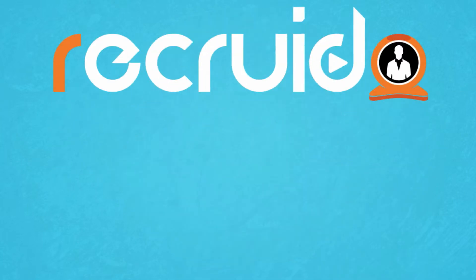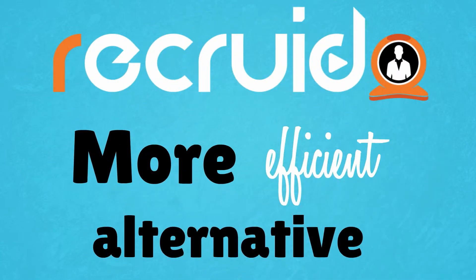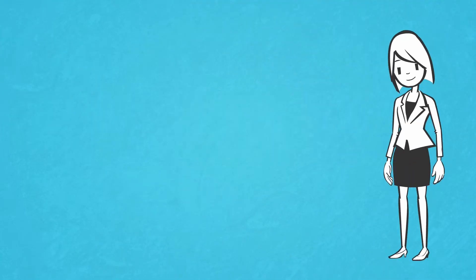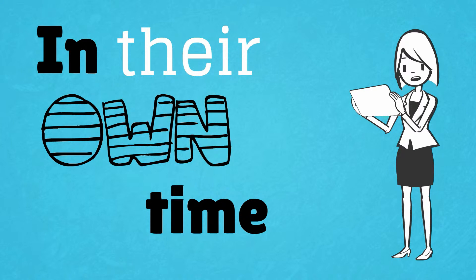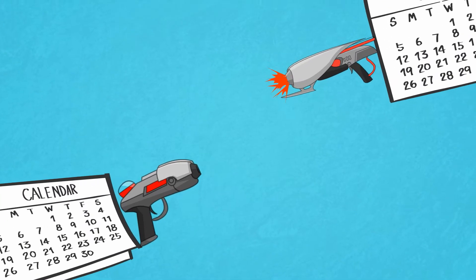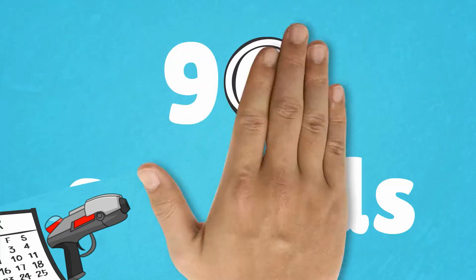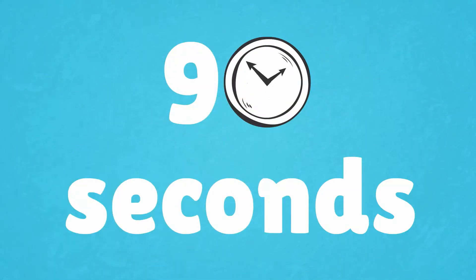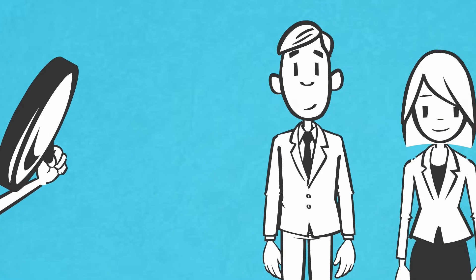Recruito is the more efficient alternative. With Recruito, you simply send automated interviews to candidates so they can record the interview in their own time and you can watch it in yours. No more phone tag, no more scheduling conflicts, and the interview is created and sent in less than 90 seconds.